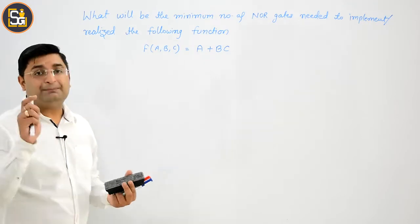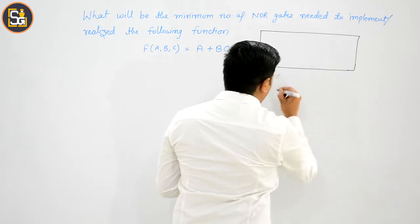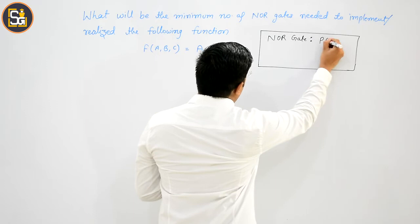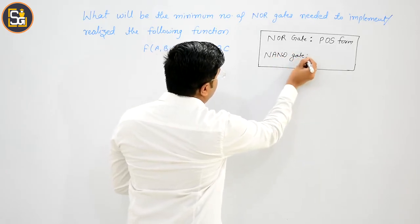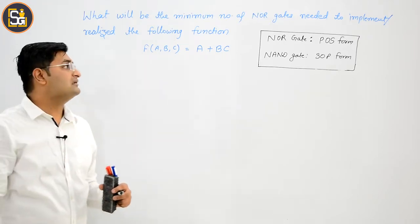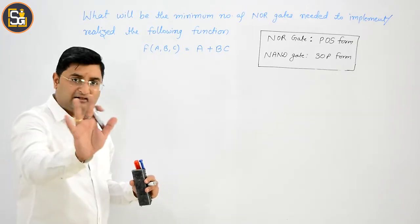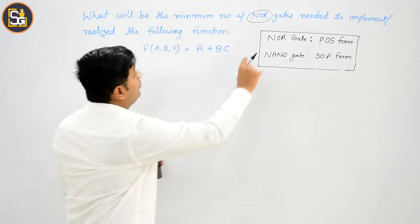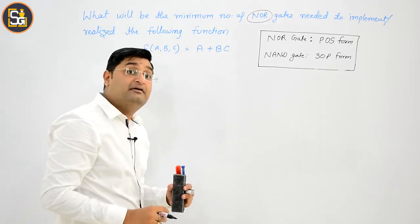The most important thing to remember here: for minimum number of NOR gates, the expression should be in POS form. This is the key rule — NOR gates work with POS, not SOP. The expression in POS form is what minimizes the NOR gate count.